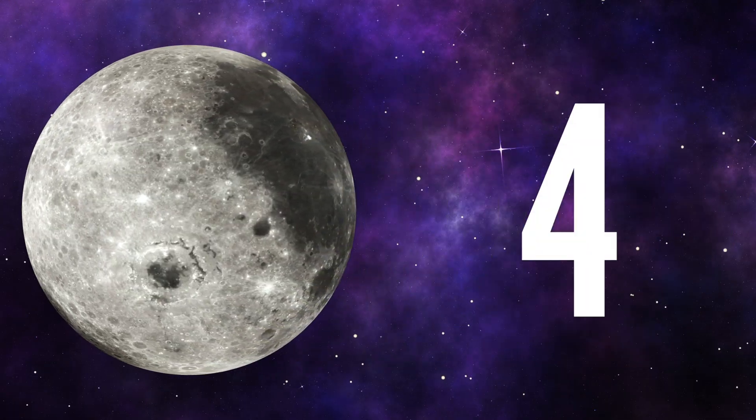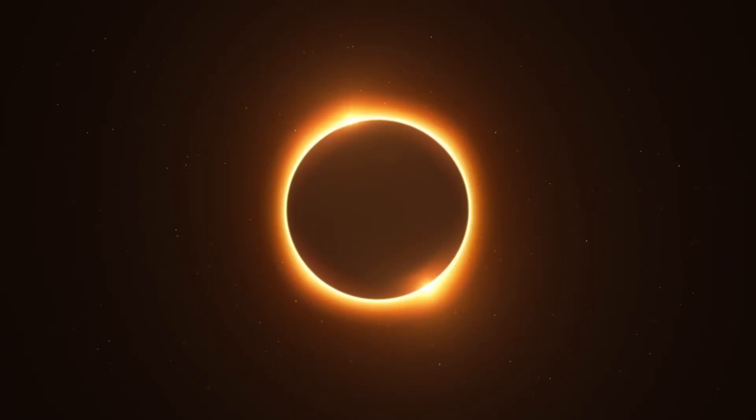Fact number four, the moon creates amazing eclipses. Sometimes, it comes between the Earth and the sun, casting a shadow on our planet. Solar eclipses and lunar eclipses are like cosmic magic shows.